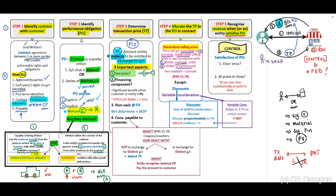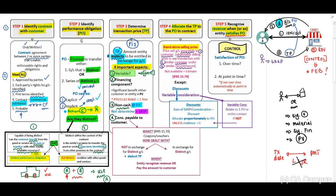The third important aspect is non-cash considerations — when the customer pays for goods in the form of non-cash consideration, we measure those goods or services at fair value. If fair value is not available, we use the standalone selling price. The fourth aspect is consideration payable to the customer — normally in the form of coupons, vouchers, and loyalty programs.